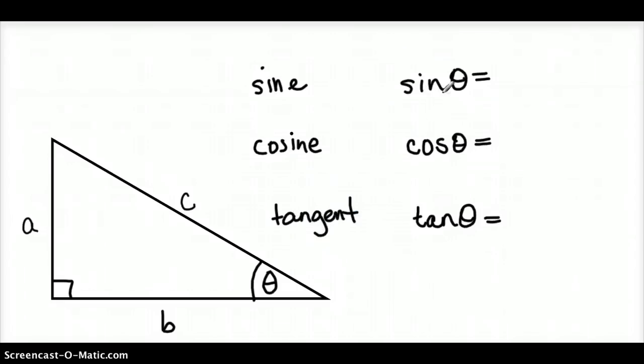And for short, we write it as SIN, but we don't say sin theta, or cos theta, or tan theta. We still say sine theta, cosine theta, and tangent theta. But we write it this way to make it simpler.